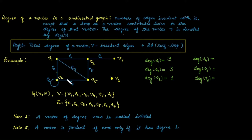For vertex v4: one edge is e3, a second edge is e4, and there is a self-loop e4. The self-loop is contributed as twice, so the degree is 1 + 1 + 2 = 4.